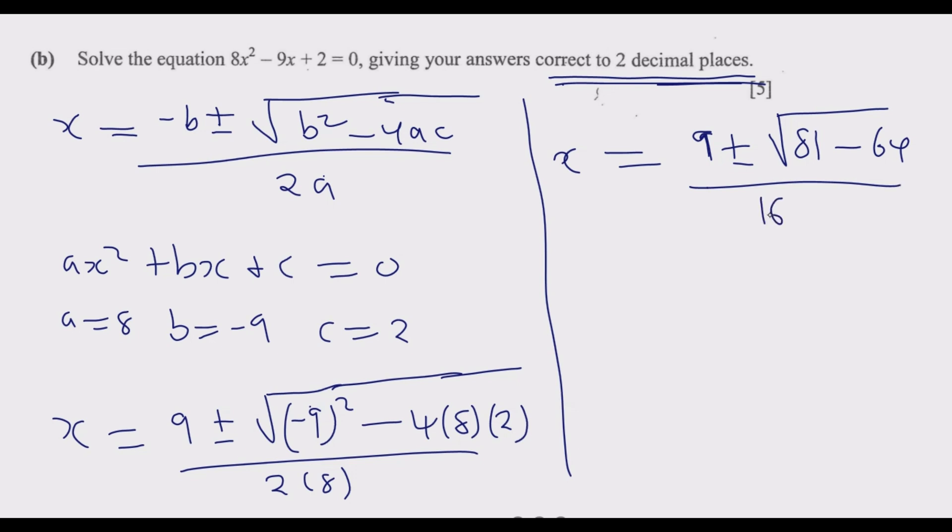x = (9 ± √17) / 16. So 81 minus 64 is 17. We have x = (9 + √17)/16 or x = (9 - √17)/16.